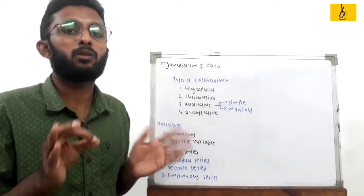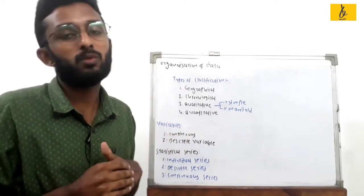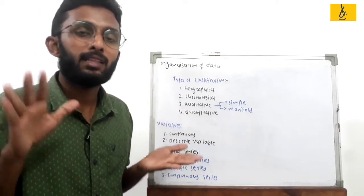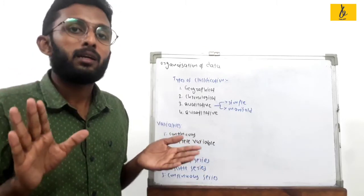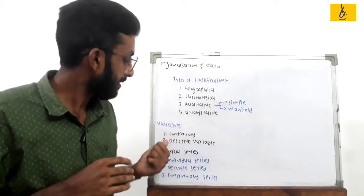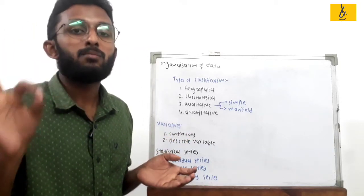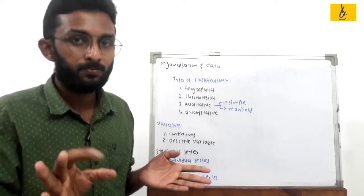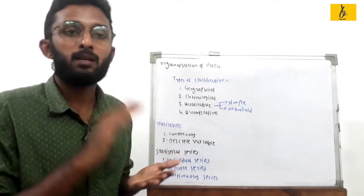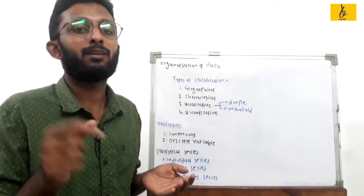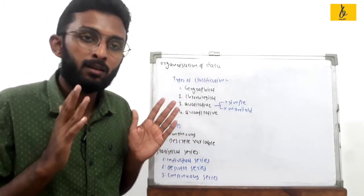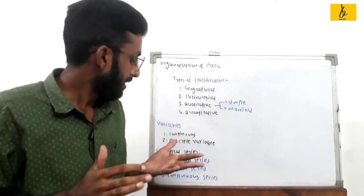For height, we can consider the same data as a continuous variable because it can take any value in a given range — for example, between 100 and 120 cm. For discrete variables, such as the number of employees in a company, we count whole numbers: 1, 2, 3. We take the count as a digit in a discrete variable.